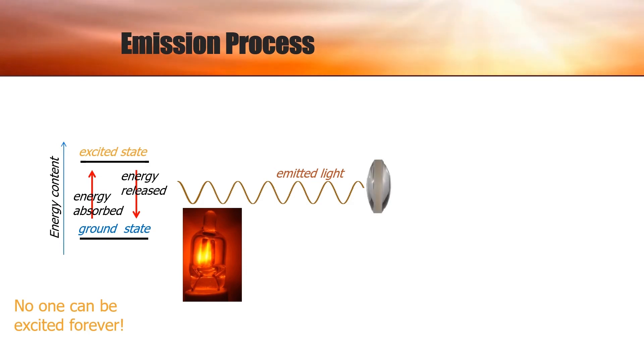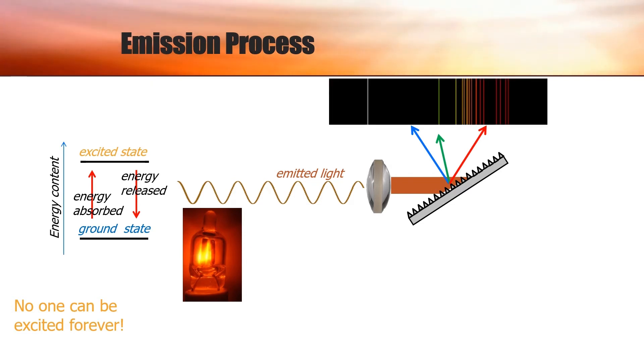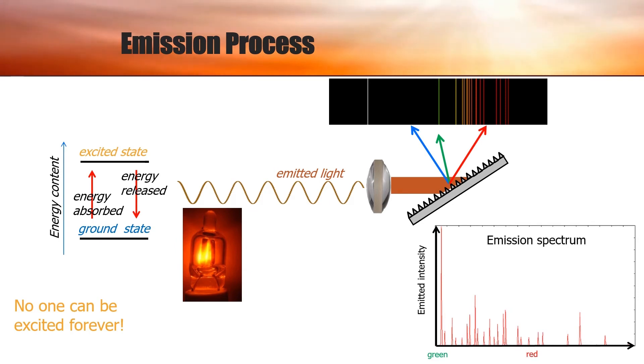Now this emitted light is focused and reflected off a diffraction grating again, and we take a snapshot of the rainbow of color it produces. The spectrum, in this case, is called an emission spectrum and consists of a plot of the intensity of the light that was emitted versus the color or energy of the light emitted. As before, this plot will be unique to the kind of matter and the amount of matter present in the sample.